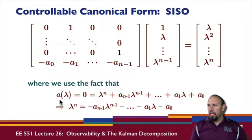Where this row times this column comes in is the fact that the characteristic polynomial for the system—remember these coefficients are the coefficients of the characteristic polynomial. If lambda is a root of the characteristic polynomial, then if I plug lambda into the polynomial I get zero. But this is the polynomial evaluated at lambda, so I can solve for lambda^n.